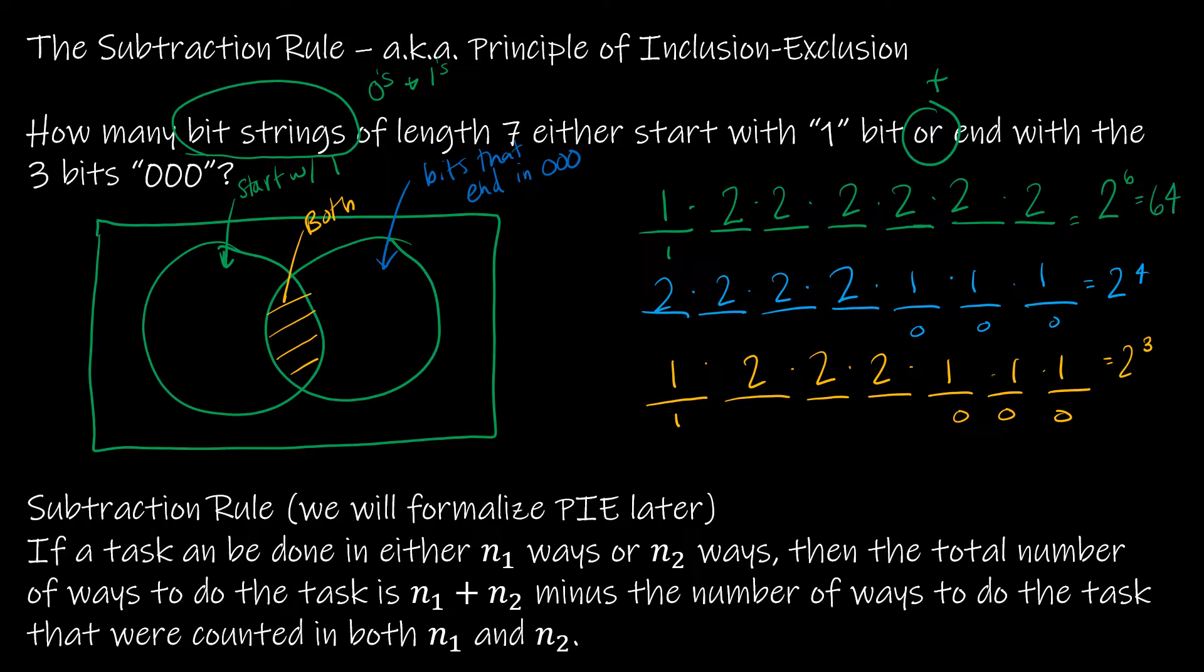So if I'm trying to put these values on my Venn diagram, 2 to the 6th is 64. And so a lot of students put 64 here, which isn't quite right because this circle has to include everything that starts with 1, including those that end in 000. So this guy is actually 64 minus the overlap. So 64 minus 8, which is 56.